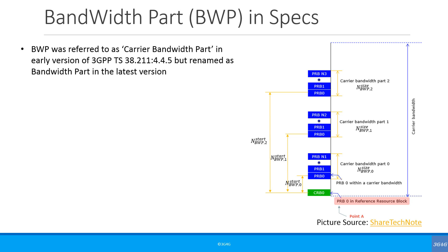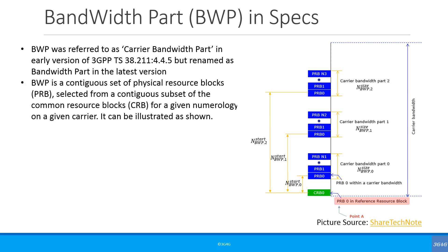As discussed, bandwidth part was referred to as carrier bandwidth part in the early version of the 3GPP technical specifications, but was renamed as bandwidth part in the latest version. A bandwidth part is a contiguous set of physical resource blocks selected from a contiguous subset of the common resource blocks for a given numerology on a given carrier, as shown in the picture.